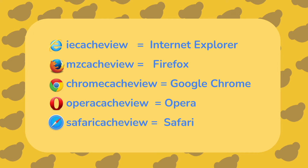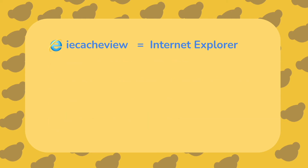Take note of which browsers are installed on your computer — we'll be running the corresponding Cache View tool for each one. IE Cache View is for Internet Explorer, MZ Cache View is for Firefox, and there are also Cache View tools for Chrome, Opera, and Safari. Because I have Internet Explorer installed on my old laptop, I'll start by using the IE Cache View tool. You can follow this tutorial regardless of which browser, because the instructions are almost identical for each different one.